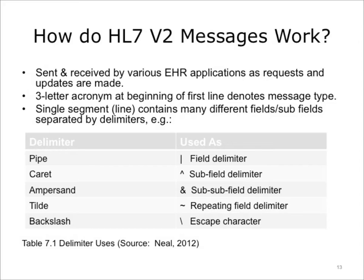Different types of HL7 messages contain different segments. Dissecting a single segment reveals one to many different fields or even subfields, each separated by a delimiter. Some delimiters include: pipe, which denotes a field delimiter; carat, which denotes a subfield delimiter; ampersand, which denotes a sub-subfield delimiter; tilde, which denotes a repeating field delimiter; and backslash, which denotes an escape character.